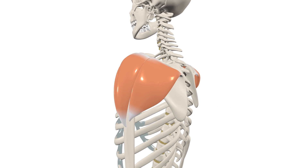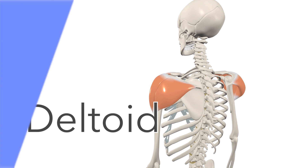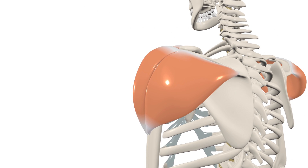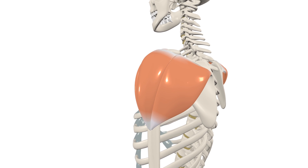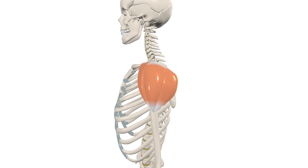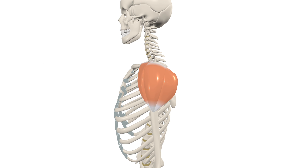In this video, we're going to talk about the anatomy of the deltoid muscle. So the deltoid is a thick triangular muscle, which covers the shoulder joint anteriorly, posteriorly, and laterally. It takes its name from the Greek letter delta, and it's divided into three different sections, which are called the anterior, middle, and posterior heads of the deltoid.